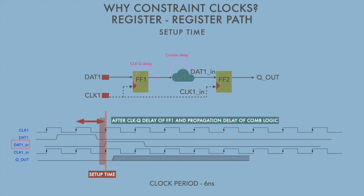Hence the input to FF2, that is dat1_in, is not stable before the setup time of FF2. Hence it's not reliably captured.